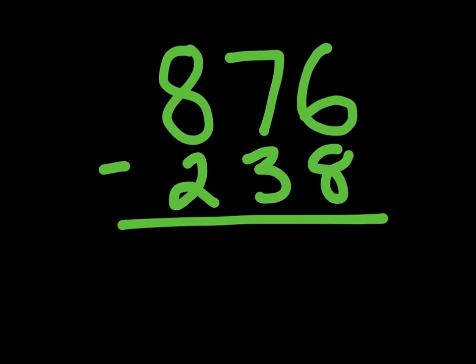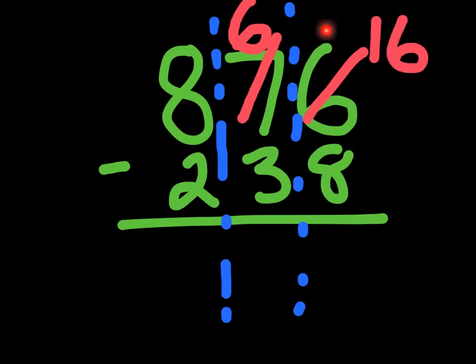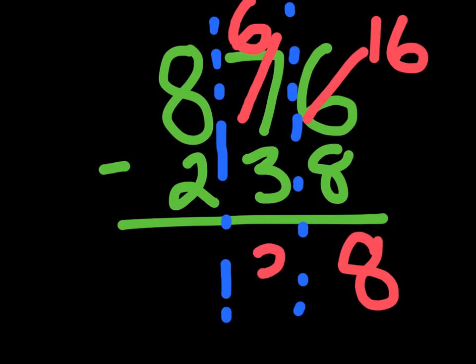Last question — let's break it up into three columns. Right hand column: six minus eight. We can't do six minus eight because six is smaller than eight, so we borrow from the seven — it becomes a six and the six becomes 16. Now right hand subtraction: 16 minus eight is eight. Middle hand: six minus three is three. Left hand: eight minus two is six. So our answer to 876 minus 238 is 638.